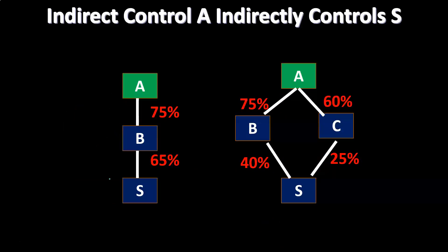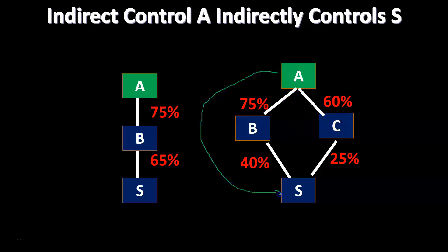Things can get more complex. Consider A with a controlling interest of 75 percent in B and 60 percent in C. A doesn't own any stock of S directly. B owns 40 percent of S — not controlling on its own since controlling is typically over 51 percent. But A also has a controlling interest in C, and C owns 25 percent of S. So between B and C together, they own 65 percent of S, which is over the 51 percent threshold.